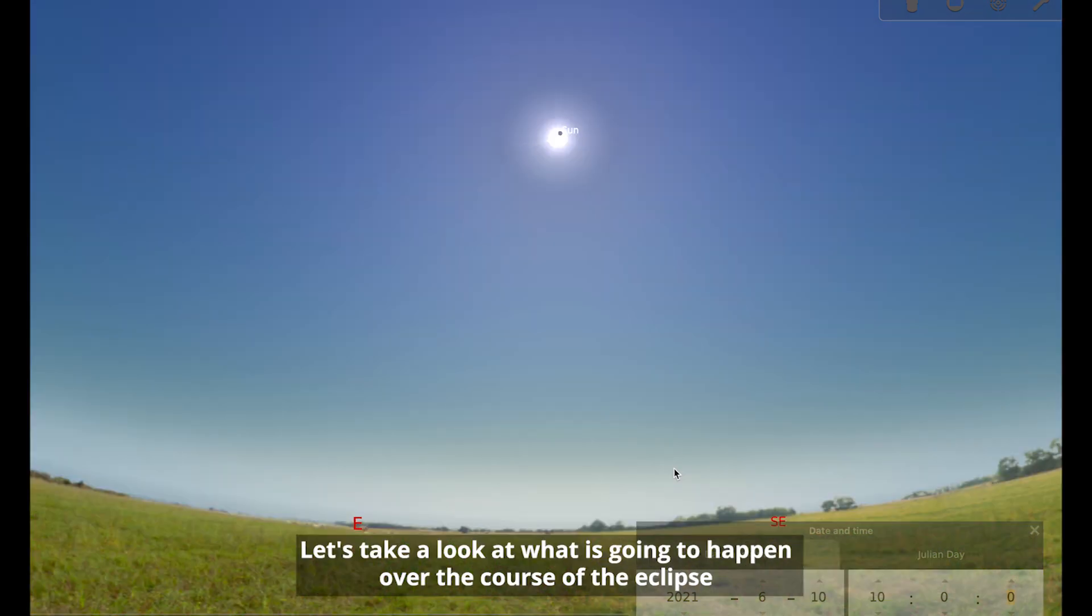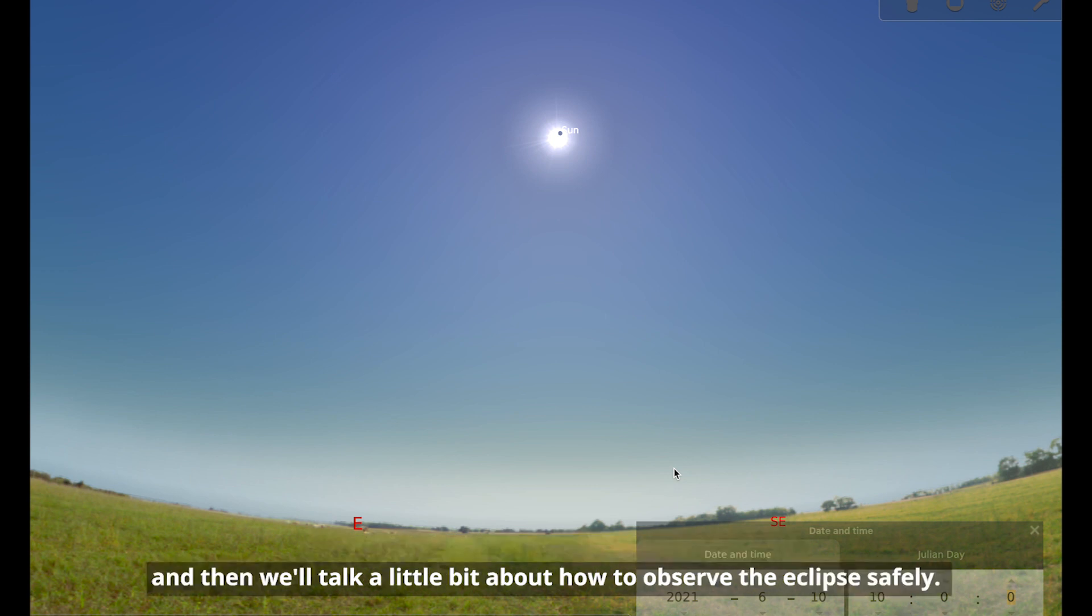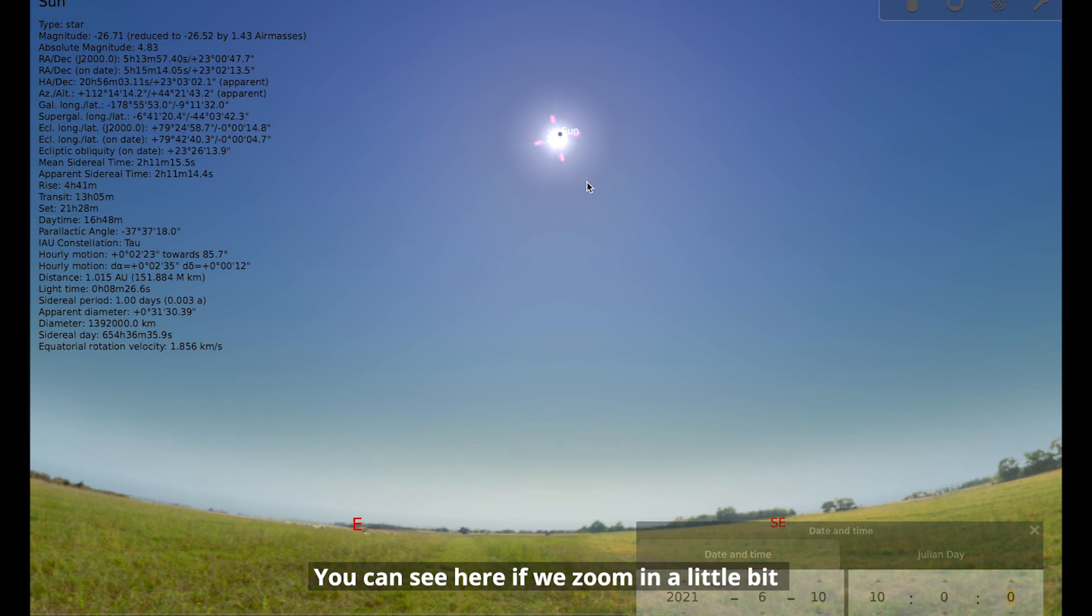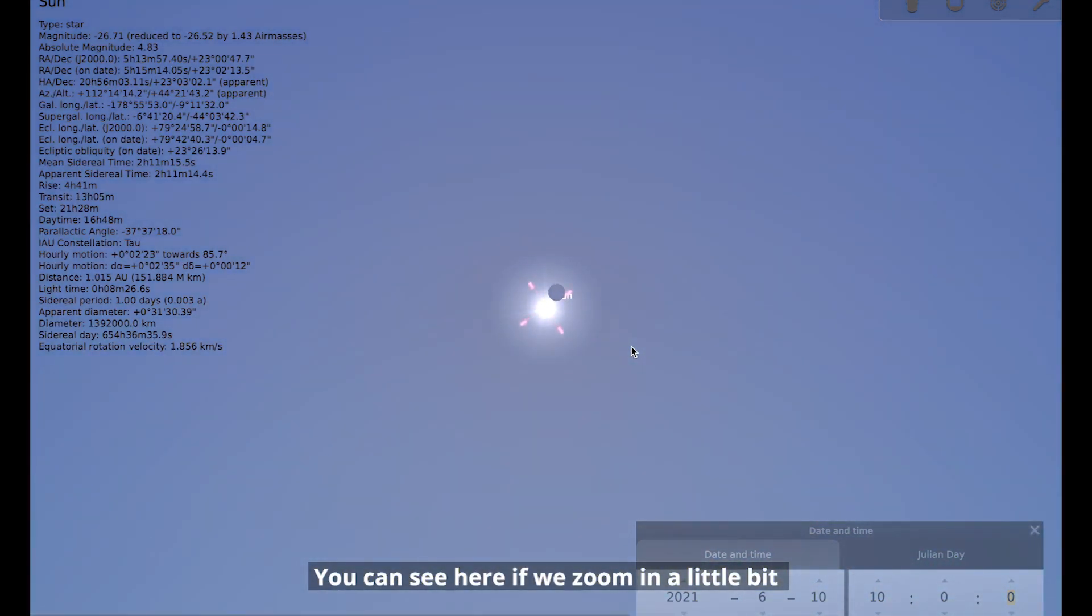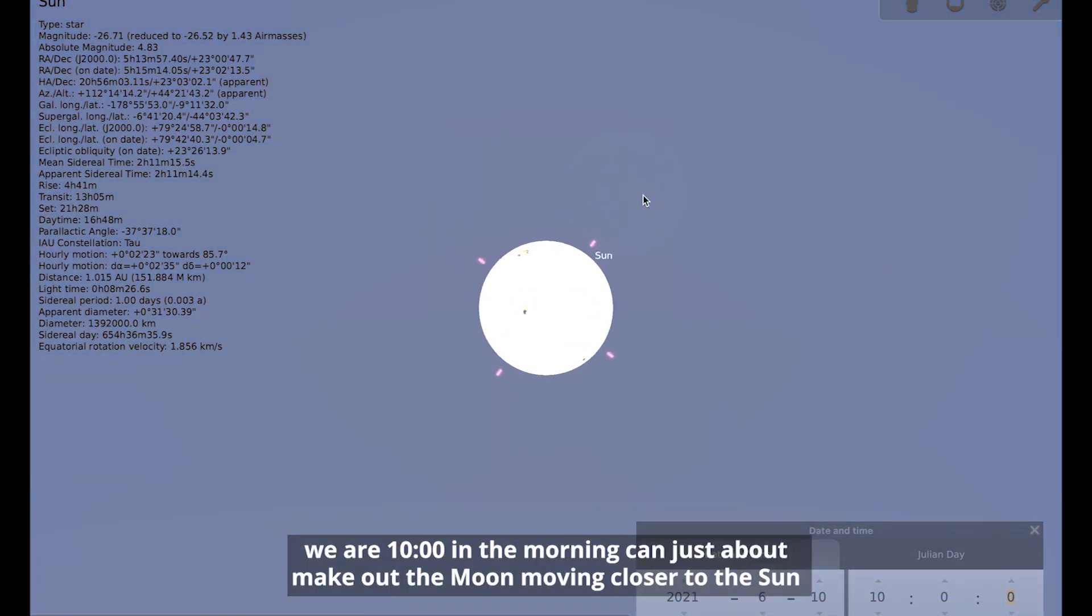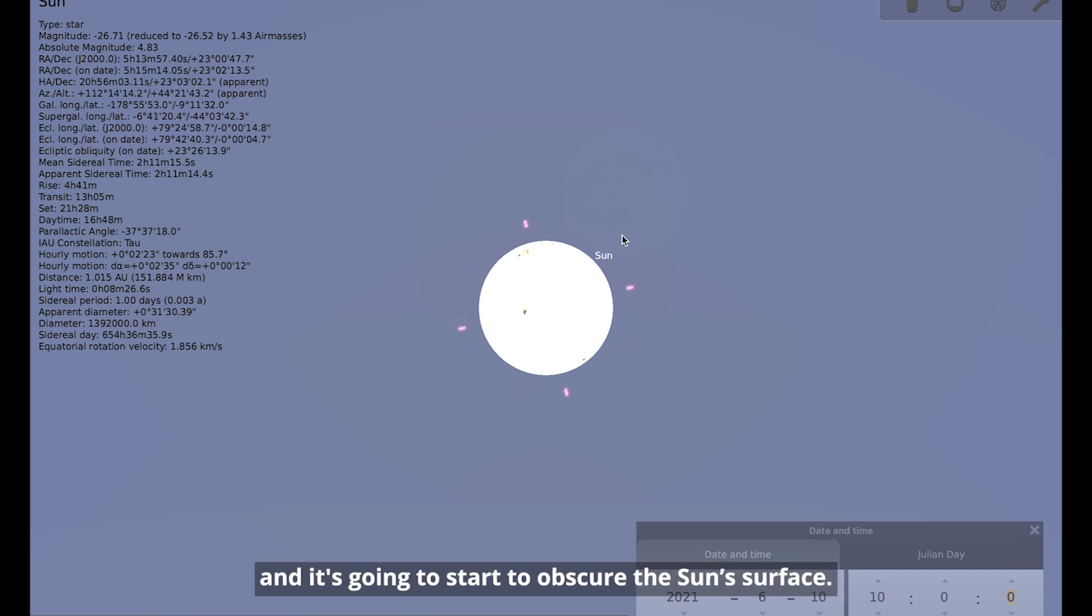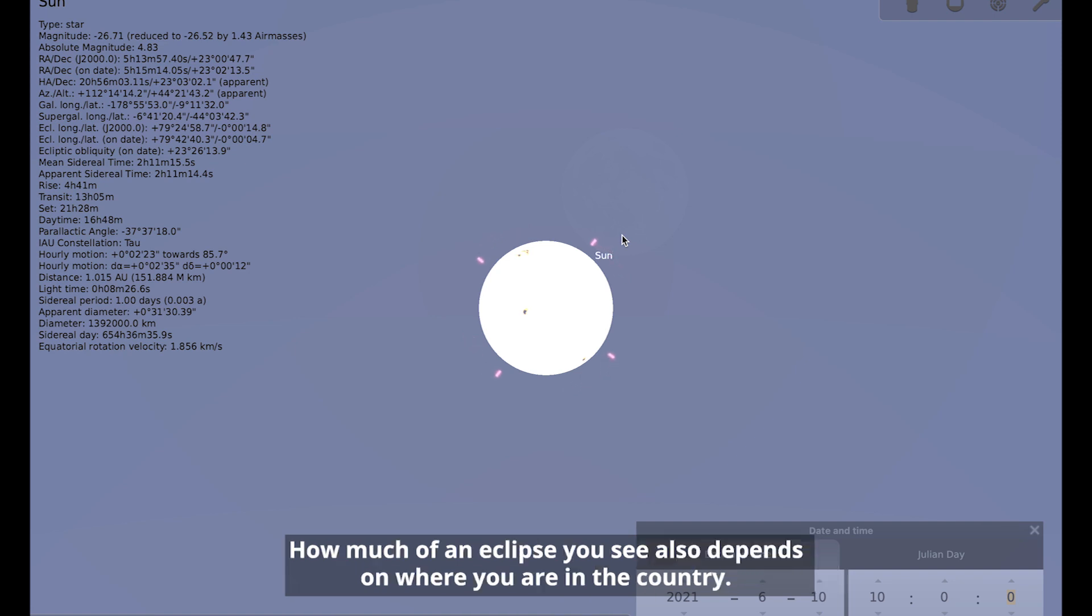So it's really important that when you're observing the eclipse, that you do it safely. And that if you're unsure, you do seek some advice from somebody who can advise you how to observe the eclipse safely. Let's take a look at what is going to happen over the course of the eclipse. If we zoom in a little bit, we are 10 o'clock in the morning. You can just about make out the moon moving closer to the sun and it's going to start to obscure the sun's surface. How much of an eclipse you see will depend on where you are in the country.